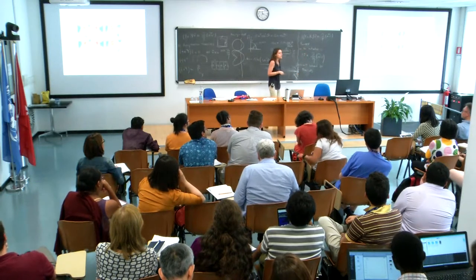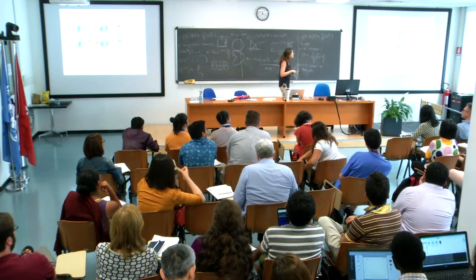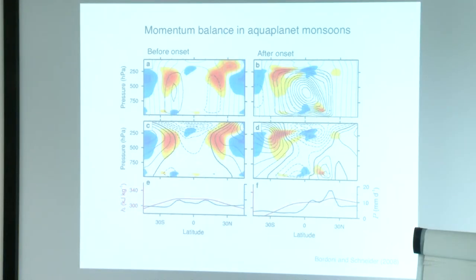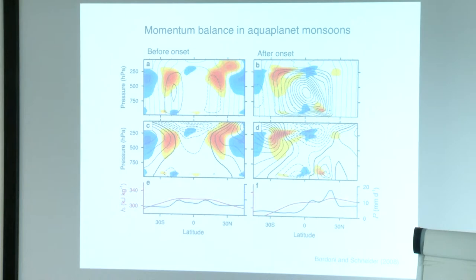Why is this transition so rapid? Why does the circulation intensify so rapidly? In these simulations, there are two feedbacks operating on very short time scales. The first is associated with the interaction between the mean flow and the eddies: as the circulation becomes cross-equatorial, upper-level easterlies develop. The easterlies shield the circulation from the eddies, so the circulation becomes more angular momentum conserving. As it becomes angular momentum conserving, you shift to much more nonlinear dynamics, and advection by the circulation really becomes dominant.